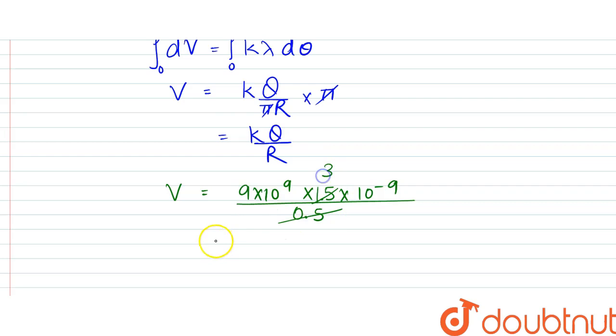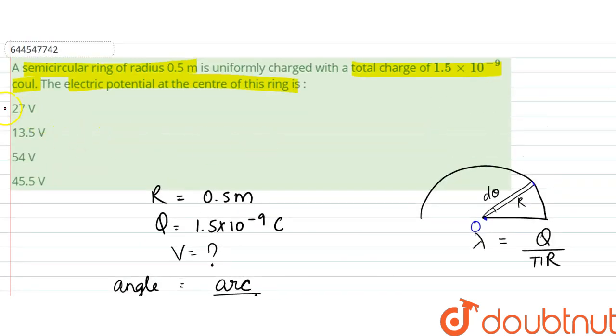So this gets cancelled with this, so this is 3, and this is 27. This and this gets cancelled, so it is 27 volt. So our answer is 27 volt, that is option A.